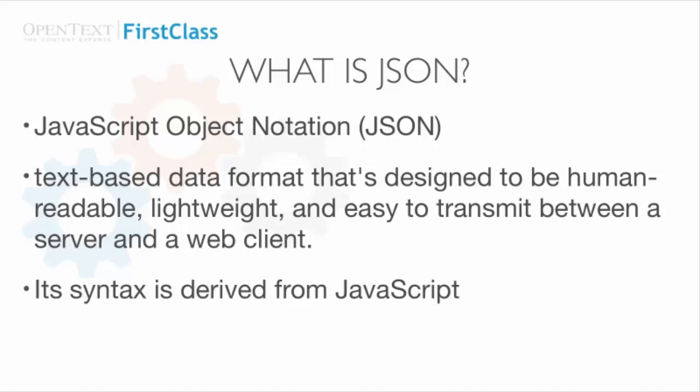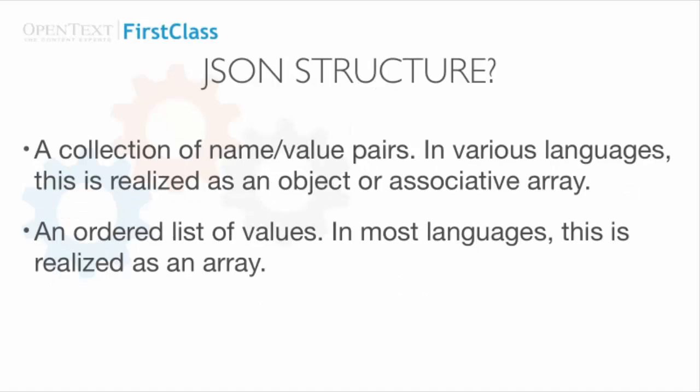JSON stands for JavaScript Object Notation and is a text-based format that's designed to be human-readable, lightweight, and easy to transmit between a server and a web client. Its syntax is derived from JavaScript, and thus the name. JSON is built on one of two structures: either a collection of name-value pairs, which is commonly realized as an object, or an ordered list of values, which in most languages is realized as an array.